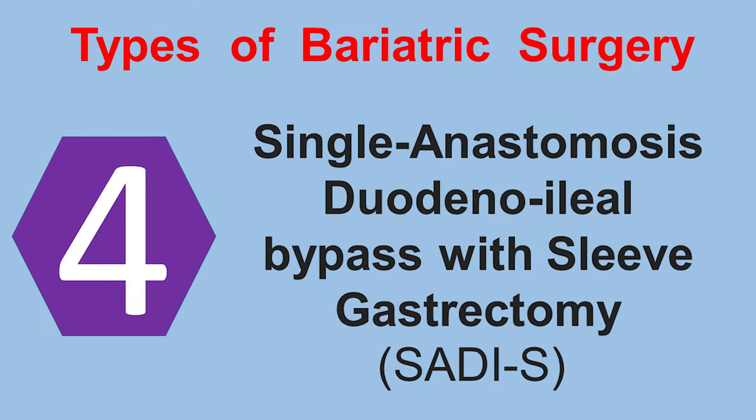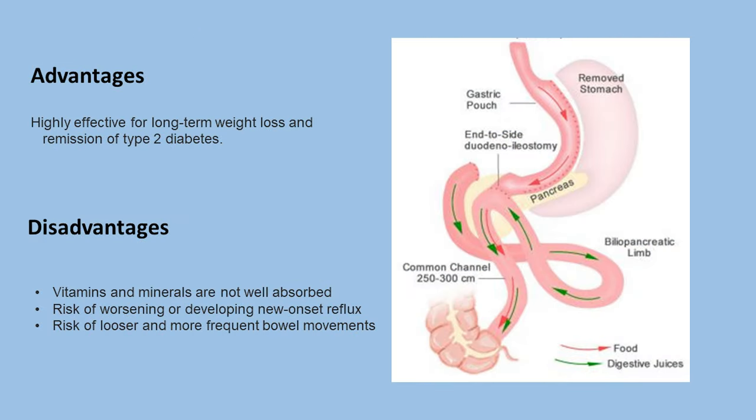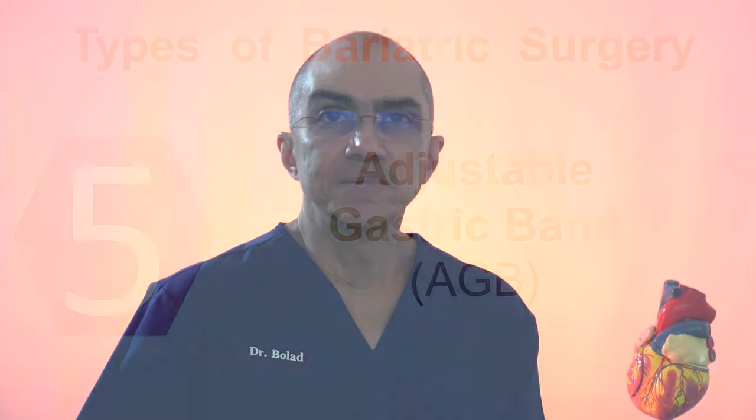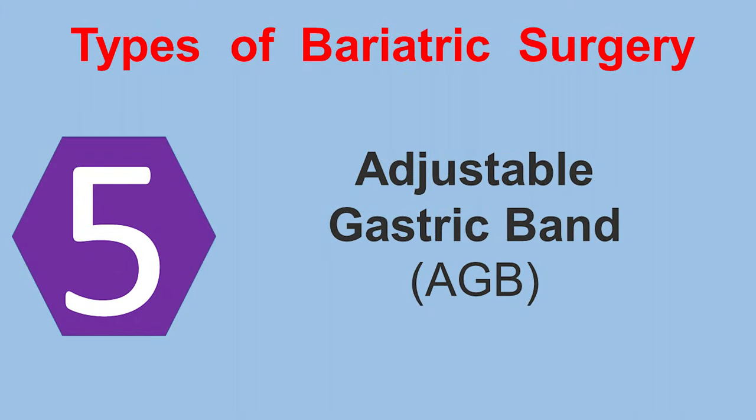Single anastomosis duodeno-ileal bypass with sleeve gastrectomy is similar to the biliopancreatic diversion with duodenal switch but is simpler and takes less time to perform. It starts by making a smaller tube-shaped stomach, then the first part of the small intestine is divided just after the stomach, and a loop of intestine is measured several feet from its end and connected to the stomach. This procedure is highly effective for long-term weight loss and remission of type 2 diabetes. However, vitamins and minerals are not absorbed as well, and there is a risk of worsening or developing new onset reflux and looser, more frequent bowel movements.